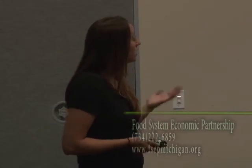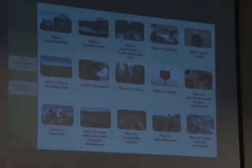These are the 15 titles of the Farm Bill. While we could easily devote a two-hour-long forum to each one of them, in the interest of time tonight we'll be focusing mainly on programs and policies from four titles: Title II, Conservation; Title IV, Nutrition; Title VI, Rural Development; and Title X, Horticulture and Organic Agriculture.